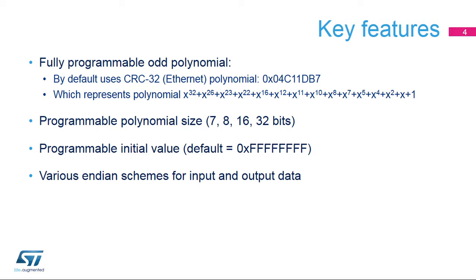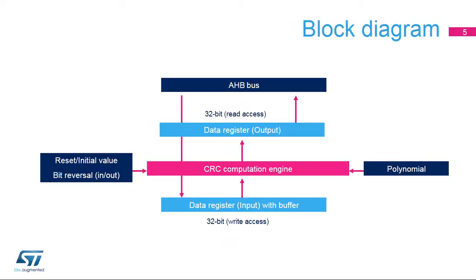The CRC calculation unit integrated in the STM32 features a fully programmable odd-value polynomial with a programmable size of 7, 8, 16, or 32 bits. The initial value is also fully programmable, allowing for very flexible run-time CRC code generation. The peripheral can be configured to support the big or little endian formats of the input and output data, supporting various communication protocols. The CRC calculation unit is connected to the AHB bus interface for optimal performance.